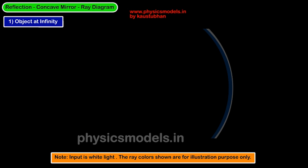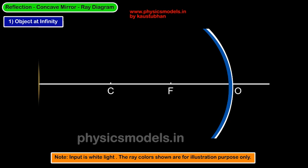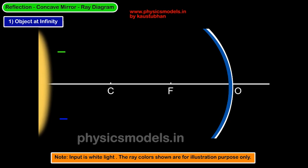A little bit about the principle axis. You draw a mirror and lay out a horizontal line that passes through the center of the mirror. The center point of that mirror is O, F is the focal point, laid out at focal length from O, and C is twice the focal length. So if you put a compass point at C and draw a radius with your compass, you should be able to draw the mirror.